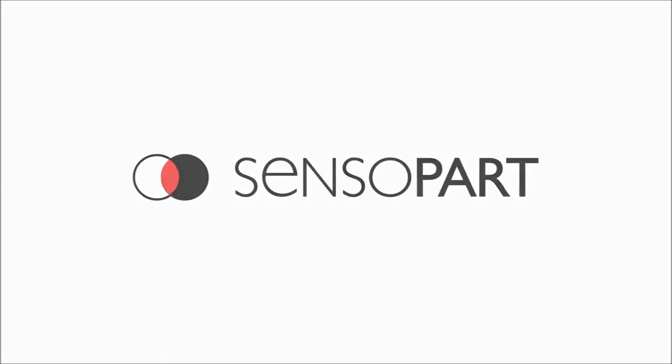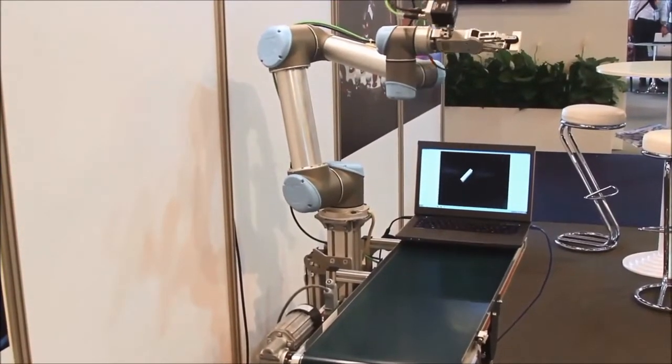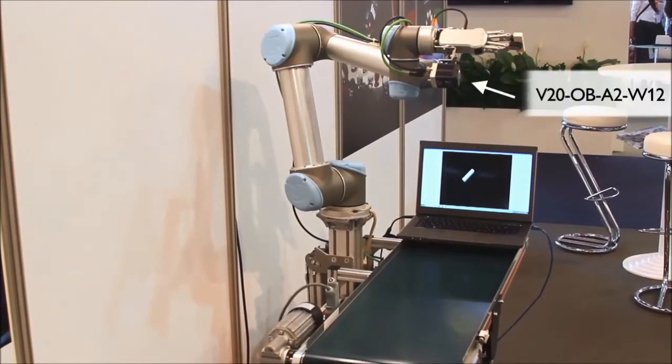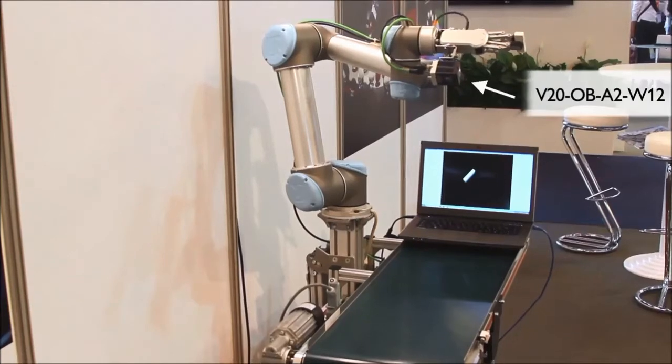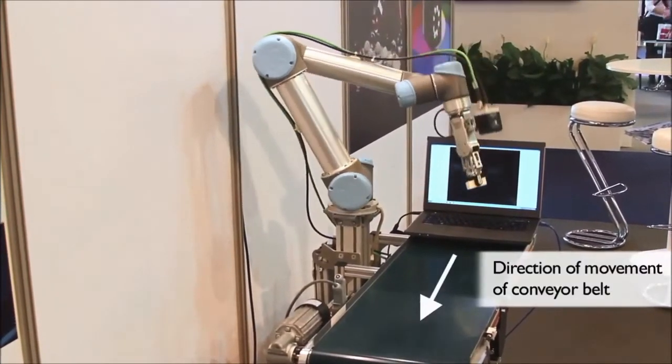This video will show a Sense-Apart Visor vision sensor communicating to a Universal Robot. This is a megapixel camera and it'll send object coordinates and angle to the robot.